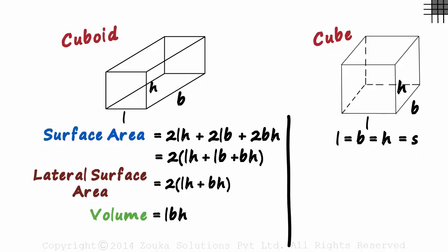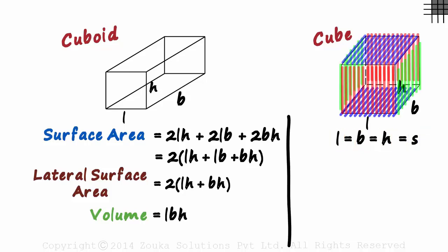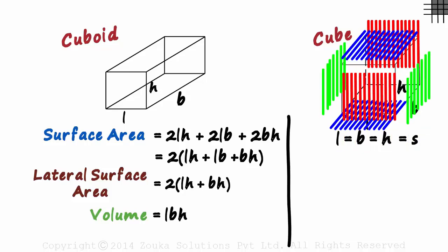Think about it. If each of the sides are equal, then each face will be a square. The area of each face will be S squared. As there are six faces, the total surface area will be 6S squared.